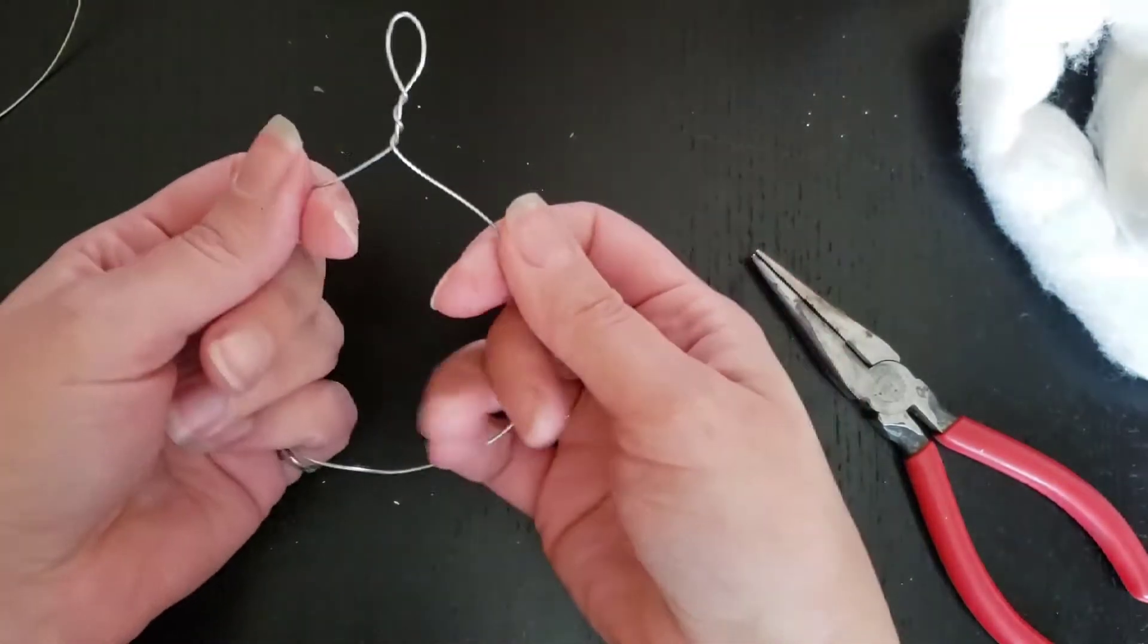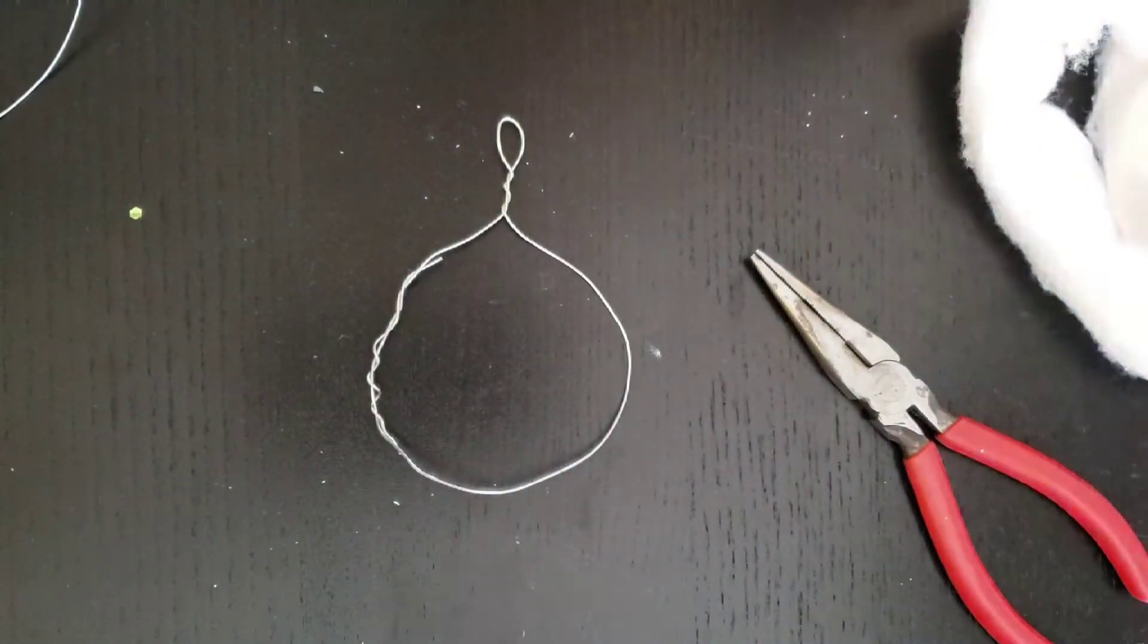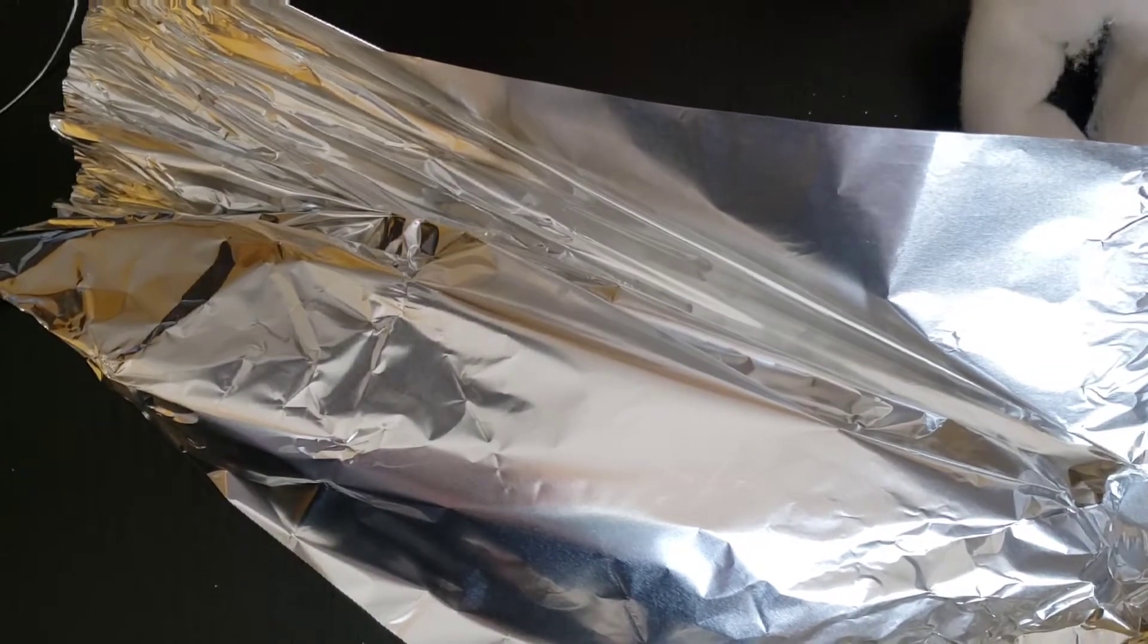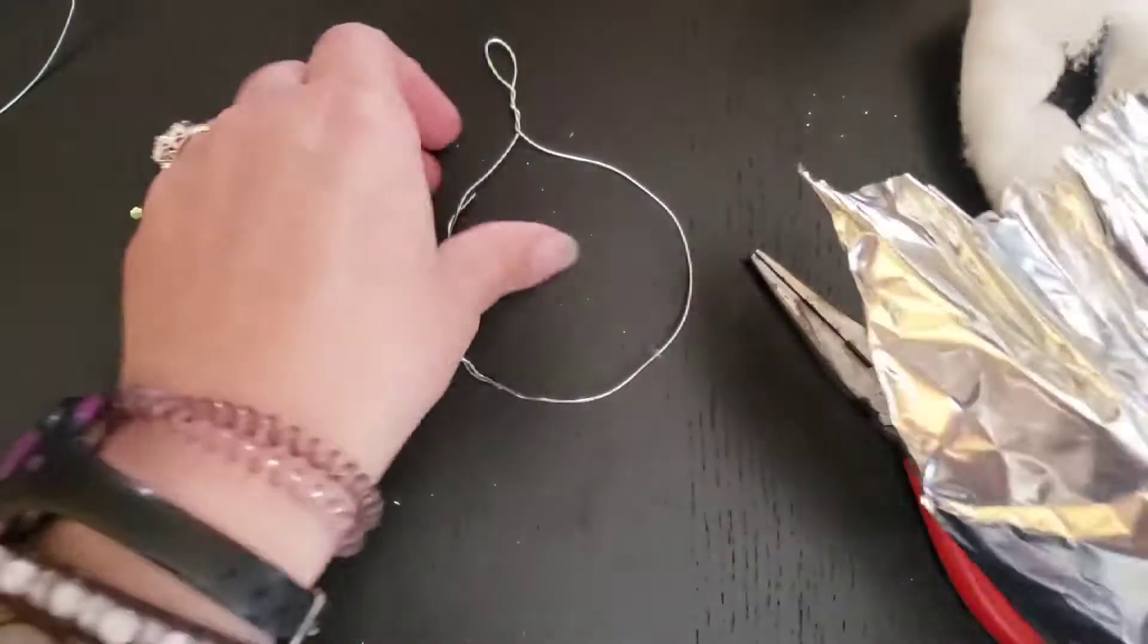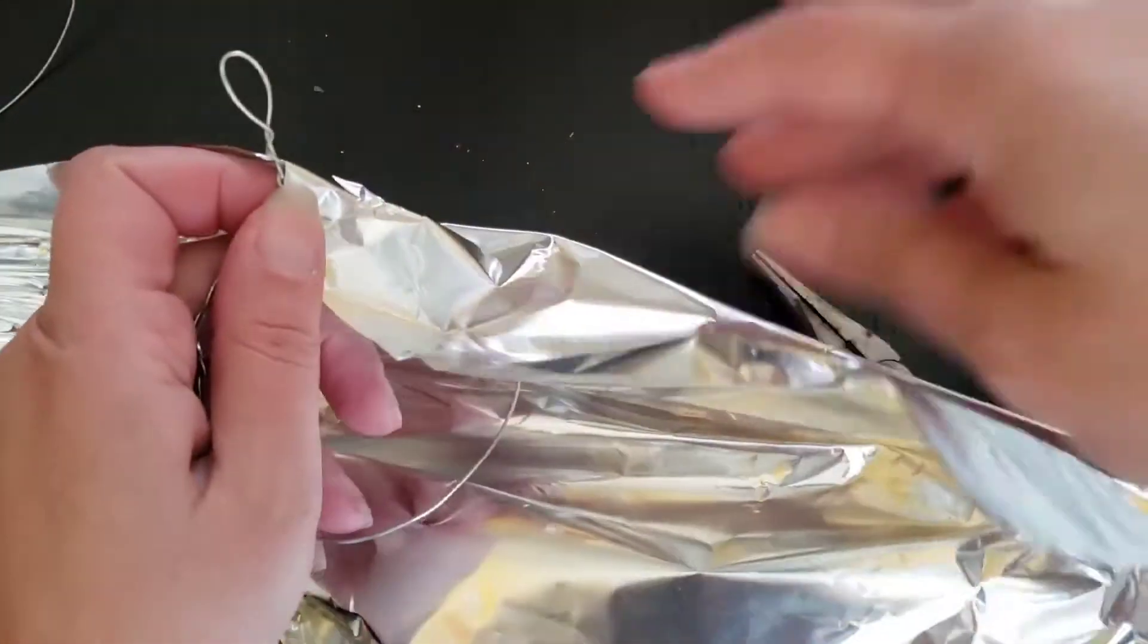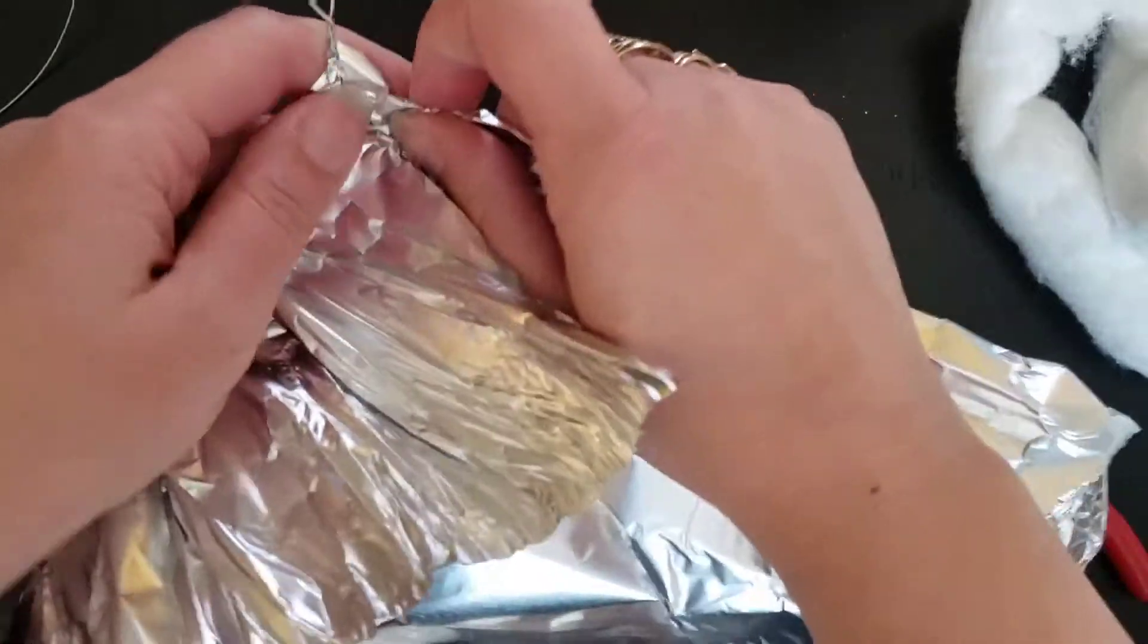So now you've got your little loop like that. You're going to need some tinfoil. I like to just peel off a couple sheets. And then you're going to take your little base and wrap this tinfoil around your base. Be careful with tinfoil. It can be sharp and you don't want to cut yourself.